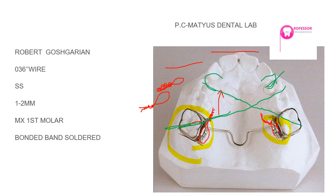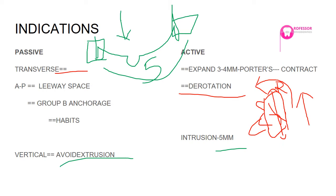For this assessment, you need a maxillary canine present and not in any crowding or spacing. This brings us back to the application of the transpalatal arch. We are done with the transverse and antero-posterior applications; now we move to the vertical plane.